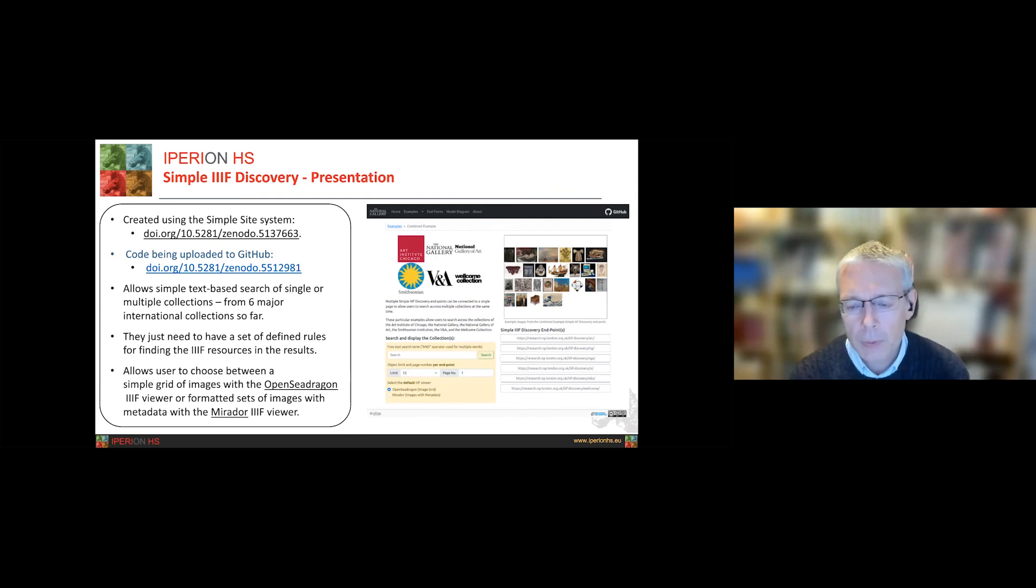So the actual presentation side is based on a system called SimpleSite, which is a GitHub-based system for creating web pages, collaborative web pages, and that has been uploaded into Zenodo as well. So it can be accessed in Zenodo or GitHub and the code for the actual simple IIIF discovery system is also up on GitHub and Zenodo. But effectively at the moment we have six institutions in there, so the Art Institute of Chicago, the National Gallery, the National Gallery of Art, the Smithsonian, the V&A and the Welcome Collection, and you can search through millions of IIIF-compliant images with a simple text search. Now I should say the Smithsonian connection is currently down in the last week due to some changes in their server setup, but we'll add that back in as soon as we can.